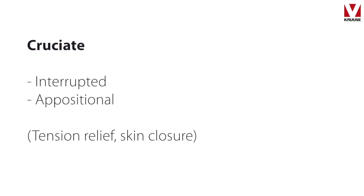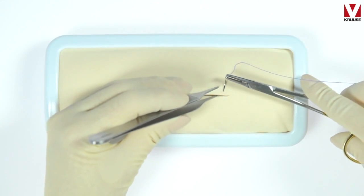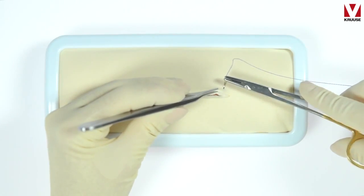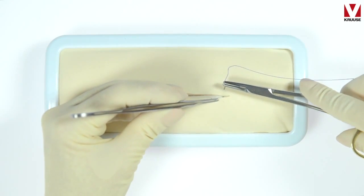Cruciate Suture Pattern. This is an appositional and interrupted suture pattern which will give tension relief and is especially good to use in skin closure.